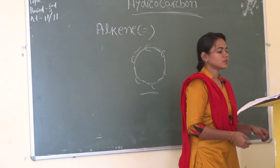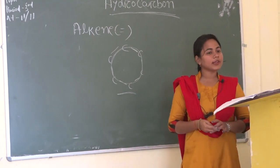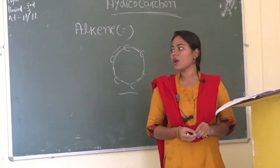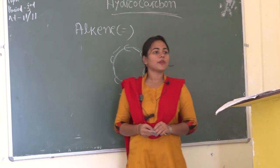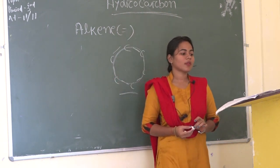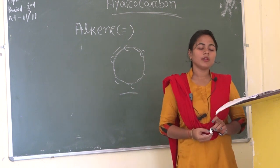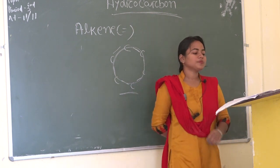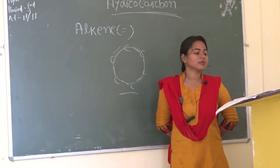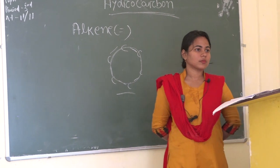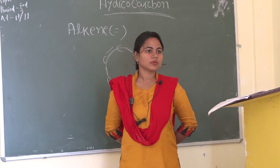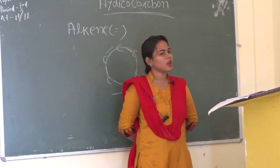It has two categories: alicyclic and aromatic. Write the examples — cyclohexane, cyclopentane. It is a closed structure. Examples like cyclohexane, cyclopentane, cycloheptane.